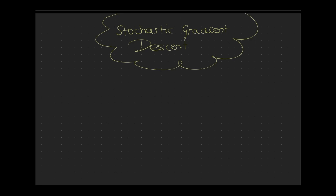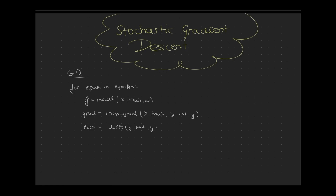In the last episodes we have used Gradient Descent in order to update the model weights such that our linear regression model was able to fit the data. So how does Gradient Descent work again? Well, we had this loop that goes over the number of epochs. Inside of this loop we computed the model prediction, the gradients, the loss, and we updated our weights. During one epoch we have used the whole batch of training data in order to train our model. Our training set lived inside the matrix X_train.